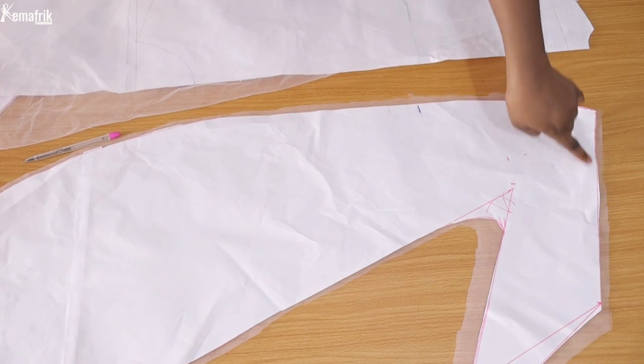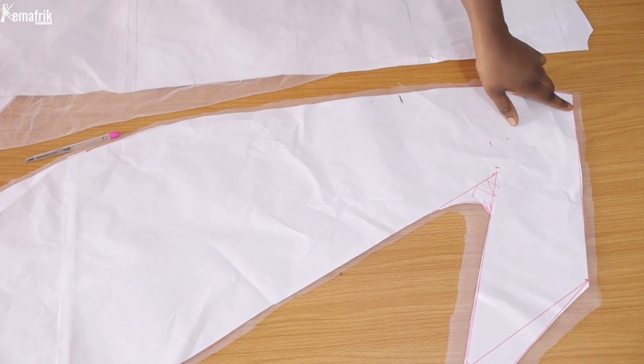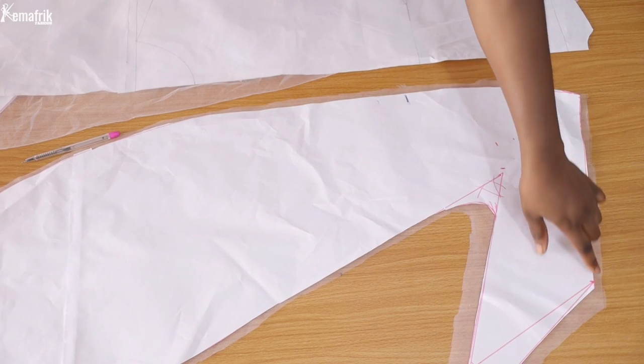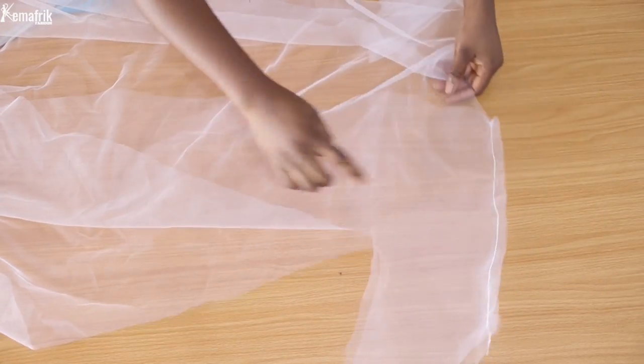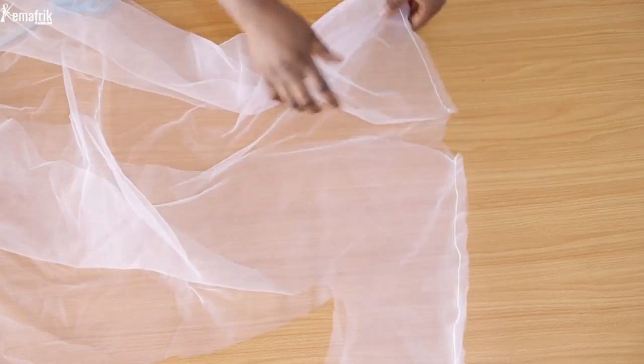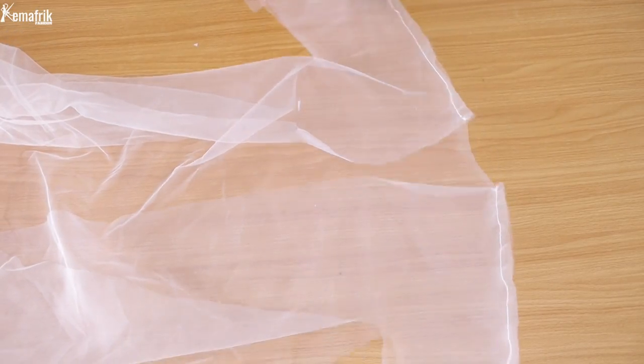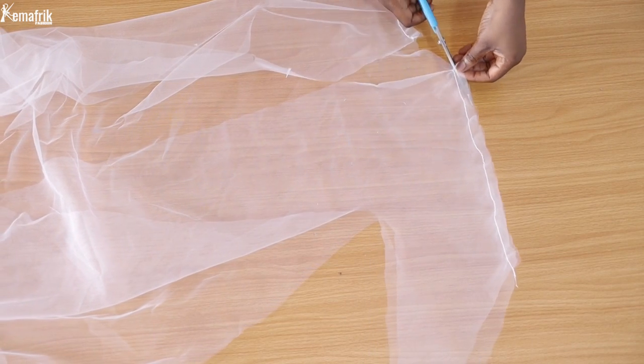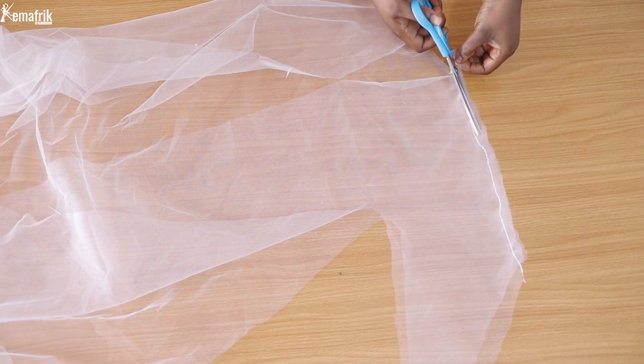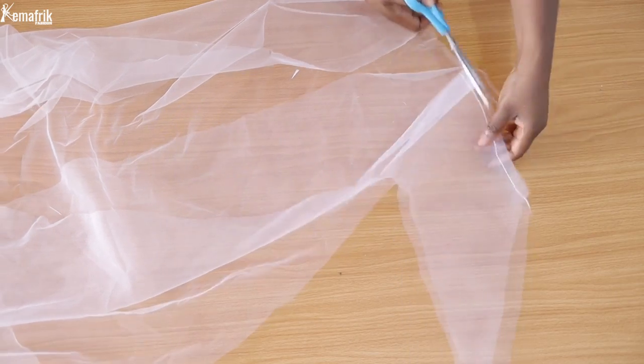I will start the sewing process by sewing the back and front piece together along the shoulder seam by half an inch. Once that is done, this is what you will have. After this step I went ahead to trim that allowance because I wanted it to be neat. But you have an option while sewing your tulle: you can decide to make use of a French seam so that you sew twice and then you have the seam allowances hidden inside.